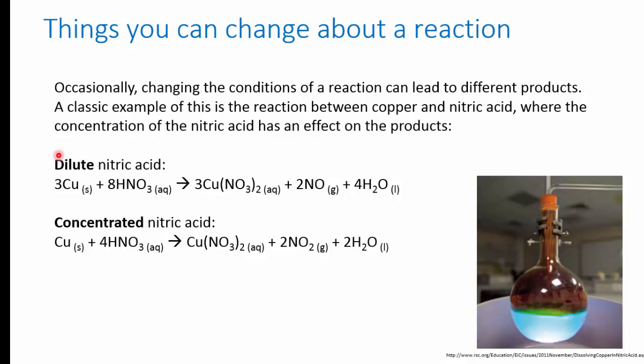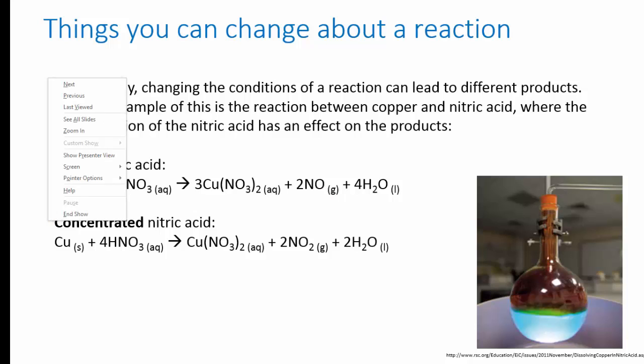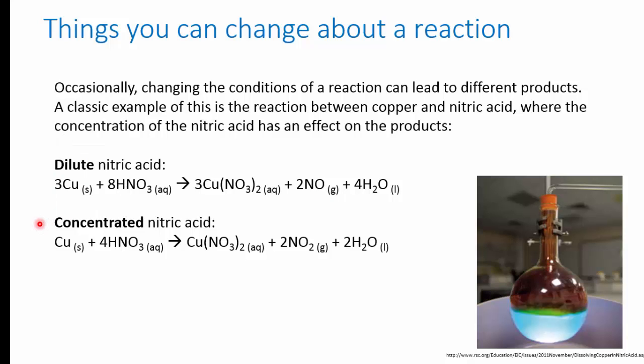If you add some copper to dilute nitric acid, one molar for example, then you get copper nitrate produced along with nitrogen monoxide gas and water. Nitrogen monoxide is colourless. But if you add the copper to concentrated nitric acid, 15 molar say, then the stoichiometry is different and we get nitrogen dioxide gas as a product. This is a brown toxic gas. And this is what you can see in the picture here from the Royal Society of Chemistry, the brown nitrogen dioxide gas coming off from the solution.